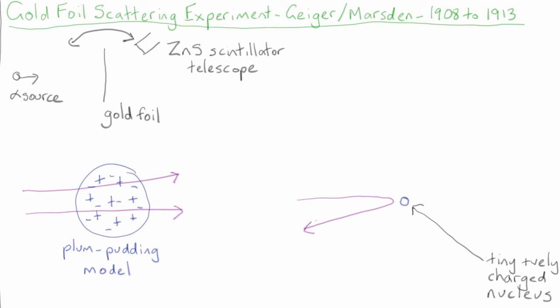If all the positive charge is in a tiny nucleus at the centre of the atom, we know the atom is neutral, so the negative charge must be situated further away. And we now know that the electrons move in orbits around the nucleus.